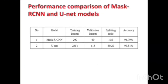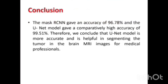Comparing the performance of Mask RCNN and U-Net models: for the Mask RCNN model, 200 training images and 60 validation images were used, while for the U-Net model, 2,451 training images and 613 validation images were used. Mask RCNN achieved an accuracy of 96.7% and U-Net achieved 99.51%. With very few training images, Mask RCNN still got good accuracy, but those 200 images required a large amount of training time. U-Net took less training time than the Mask RCNN model and produced more accurate results. By comparing the performance of both models, we conclude that the U-Net model is more accurate than the Mask RCNN model.